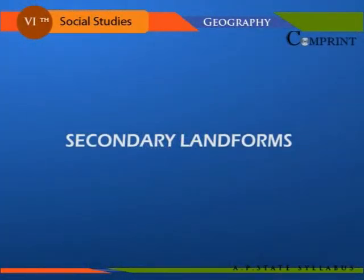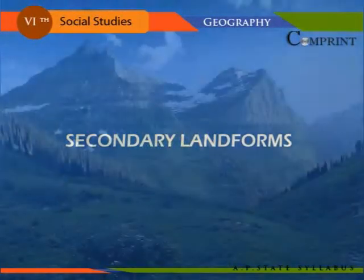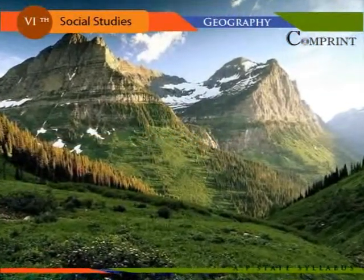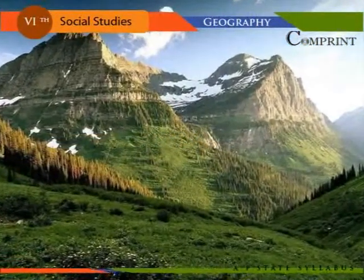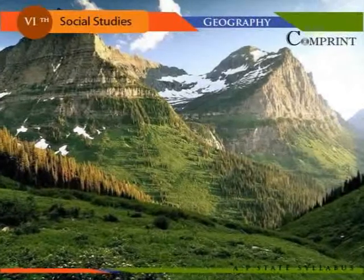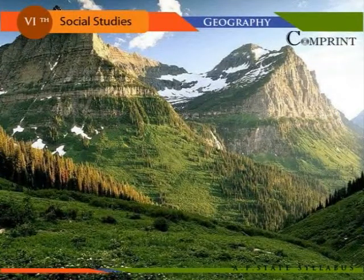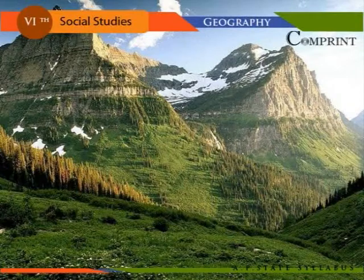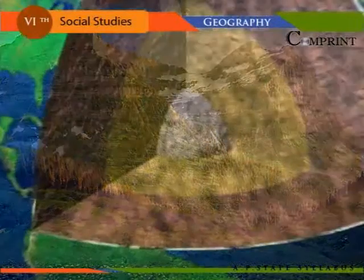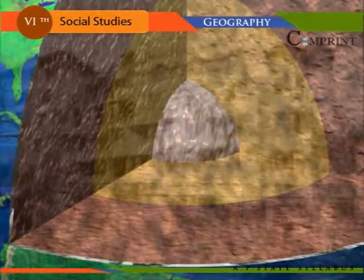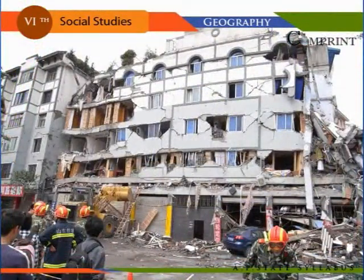Secondary Landforms. The land on the Earth consists of mountains, plateaus, and plains. These landforms were formed due to climatic changes taking place on the Earth's surface, the internal heat of the Earth, earthquakes, and volcanic eruptions.